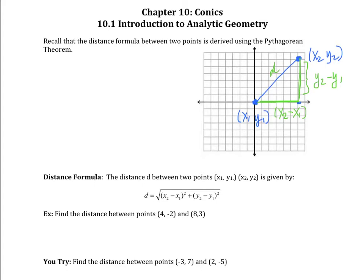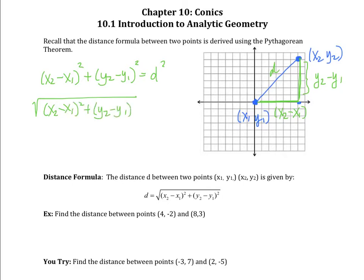I can use the Pythagorean theorem. The horizontal distance, x2 minus x1, squared, plus the vertical distance, y2 minus y1, squared, equals the hypotenuse of that right triangle, which is d squared. To get d by itself, I take the square root of both sides. So the square root of (x2 minus x1) squared plus (y2 minus y1) squared equals the distance between the two points (x1, y1) and (x2, y2). We have derived our distance formula between any two points.